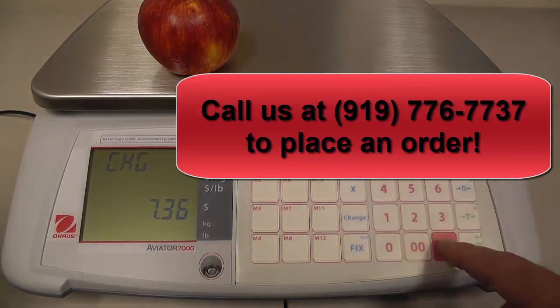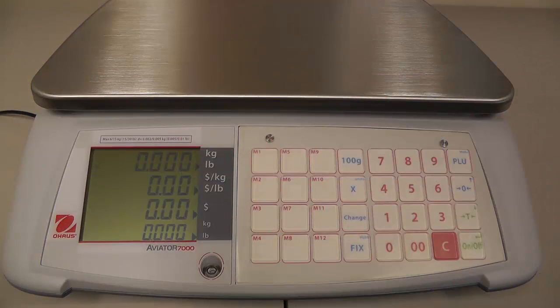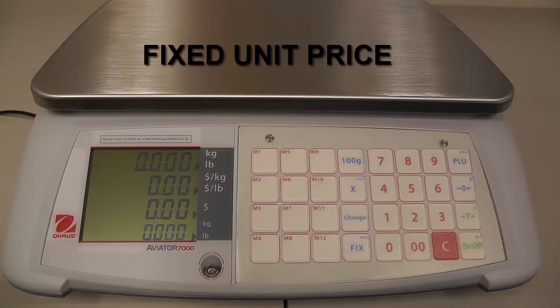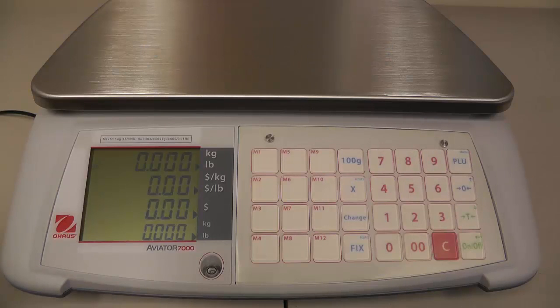We press the C button to get out of that function. The next example we're going to take a look at is the fixed unit price. When you normally use the scale, whenever you enter a price per pound, it will automatically clear itself out after you place the items on the scale and then take them off. In this case with the fixed unit price, it's going to stay in the scale until you remove it yourself. The benefit of this is basically for pre-packing where you're constantly using the same item over and over again.